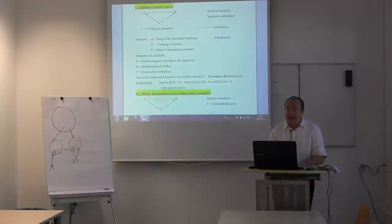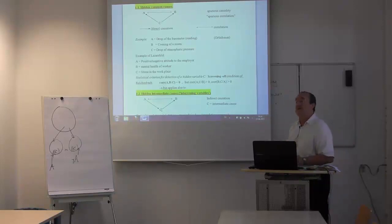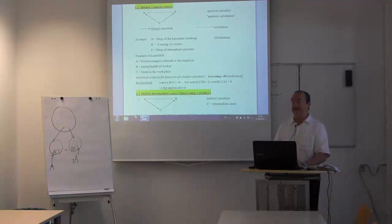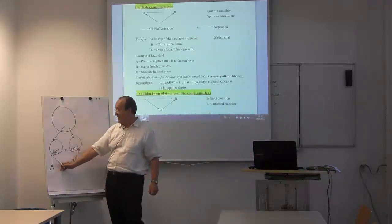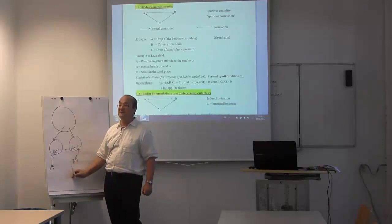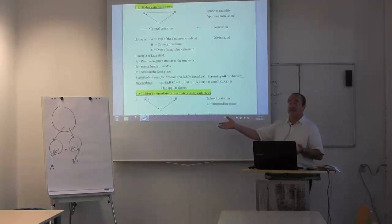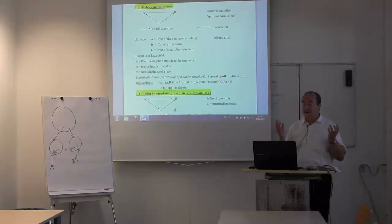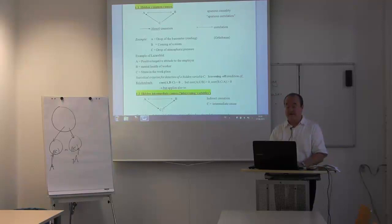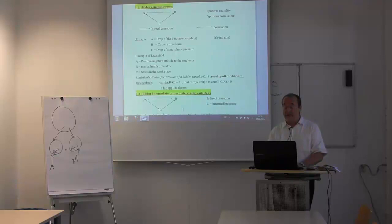But that will not work for an intermediate cause. An intermediate cause cannot be eliminated by random experiment because here C is an effect of A. As soon as you introduce A by manipulation, C will be its effect. By an intervention or experimental manipulation, you can make the cause statistically independent of all its non-effects, but not independent from its effects. So with a random experiment you really can discriminate the two cases: if the correlation breaks down, it was a common cause; if a correlation remains, any hidden variable involved can only be an intermediate cause.